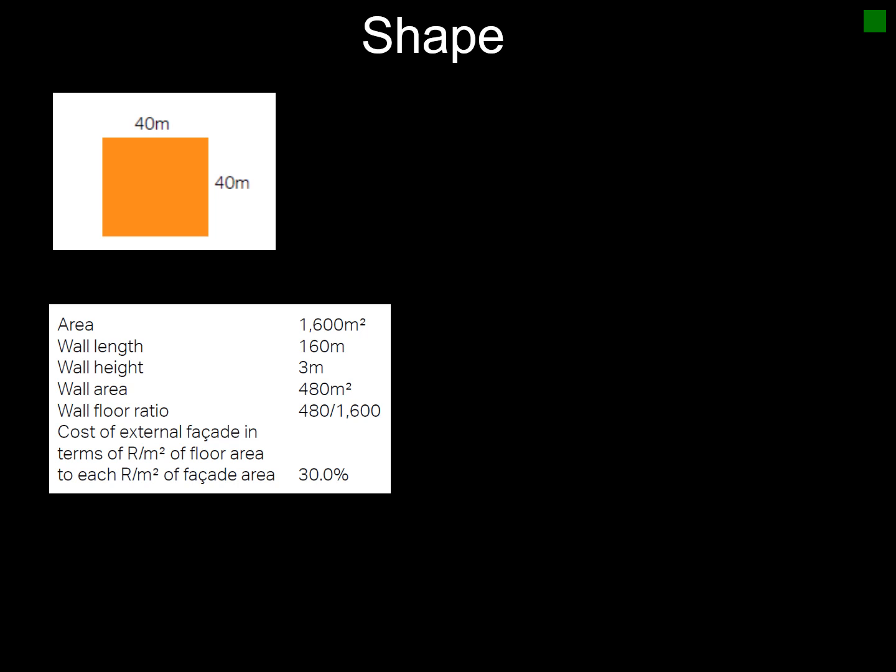The wall length is 160 meters, the wall height is 3 meters, and the wall area is thus 480 square meters. The floor ratio is 480 over 1,600 square meters. You can calculate the cost of the external facade in rand per square meter of floor area — it works out at roughly 30% of your cost.